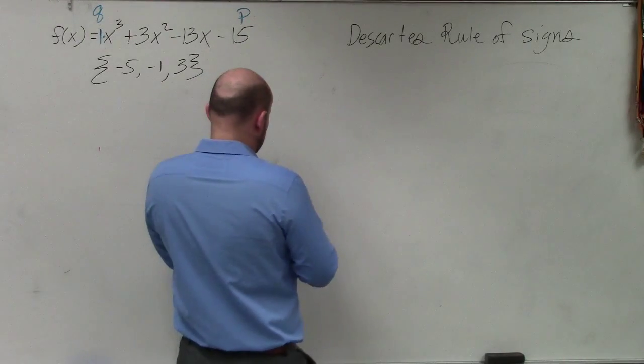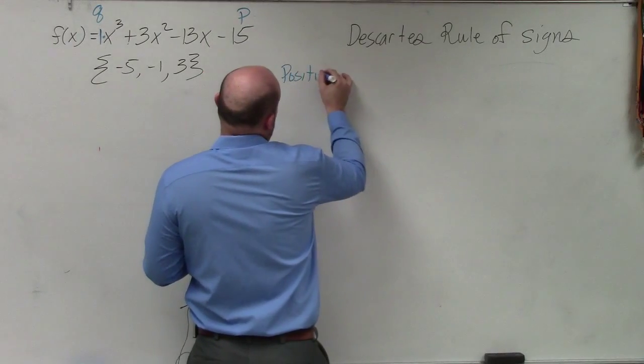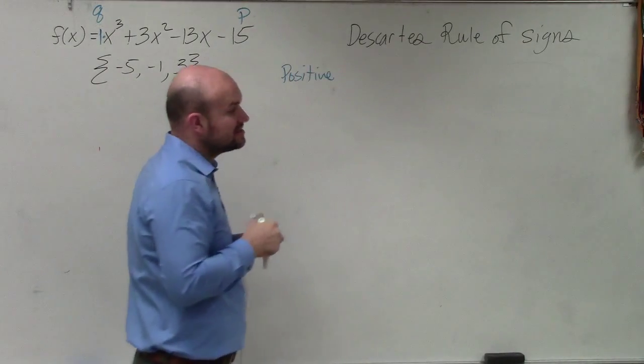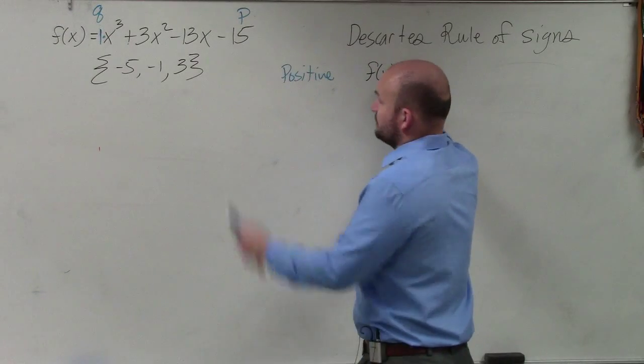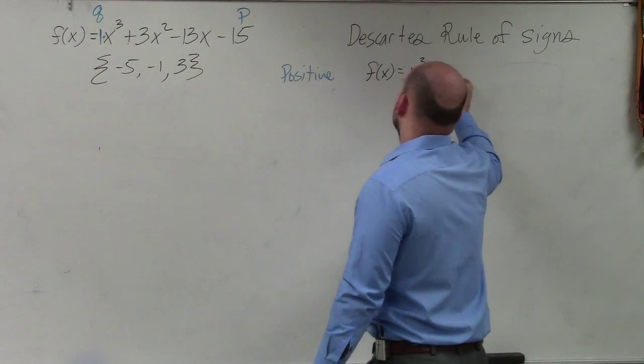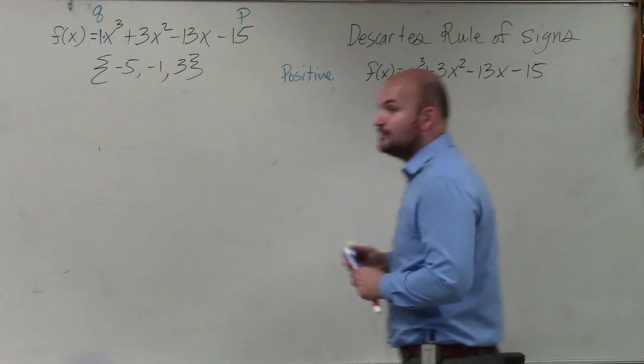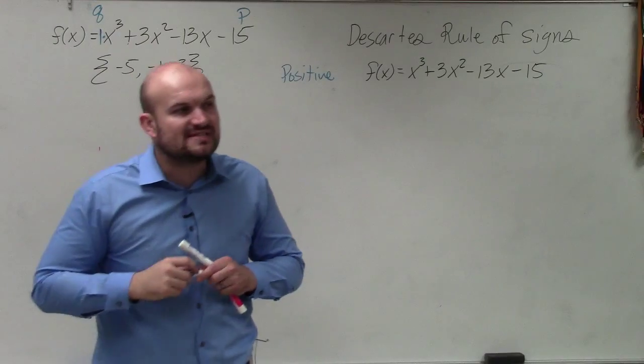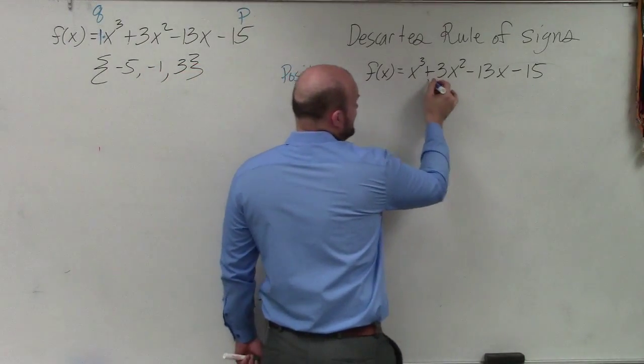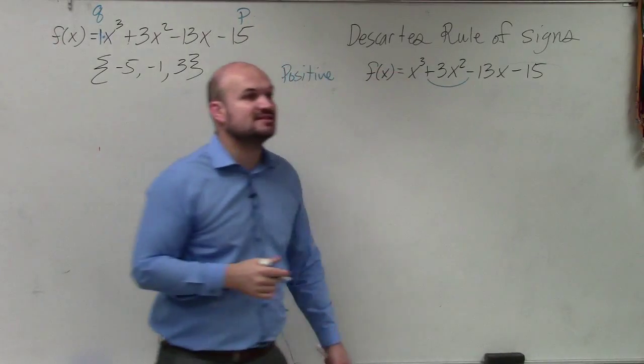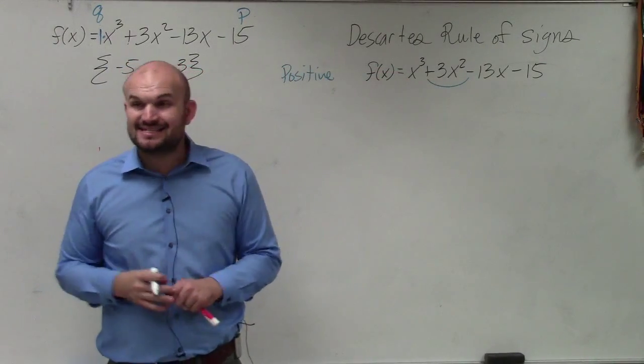And Descartes' rule of signs works like this. To find the number of positive real solutions, all you simply do is take the function. So I'm going to rewrite the problem. You just take the problem and you find the number of sign changes between the terms. So I'm going from a positive to a negative. That is one sign change. Any time you go from a positive to a negative, or a negative to a positive, that's a sign change.